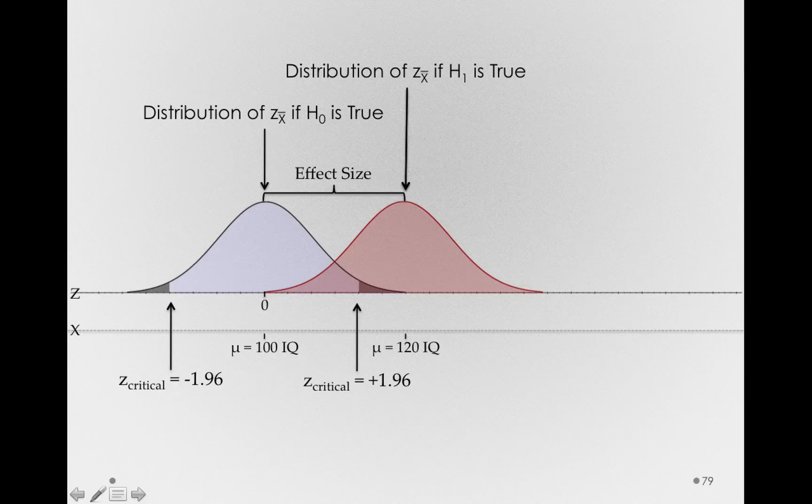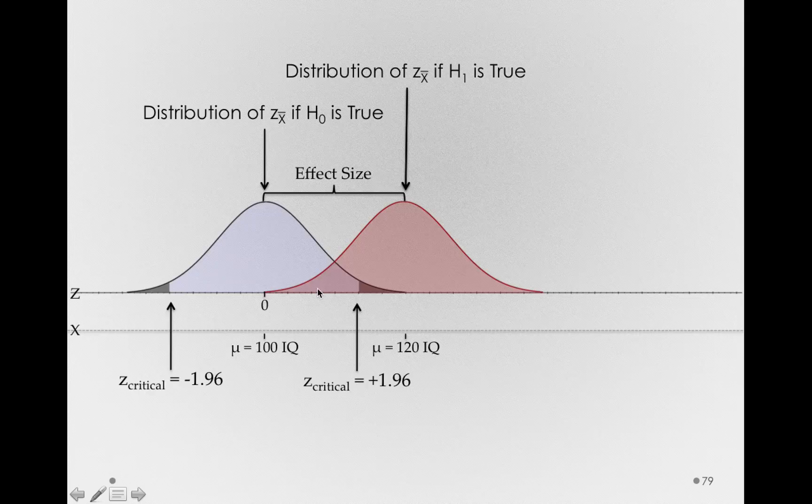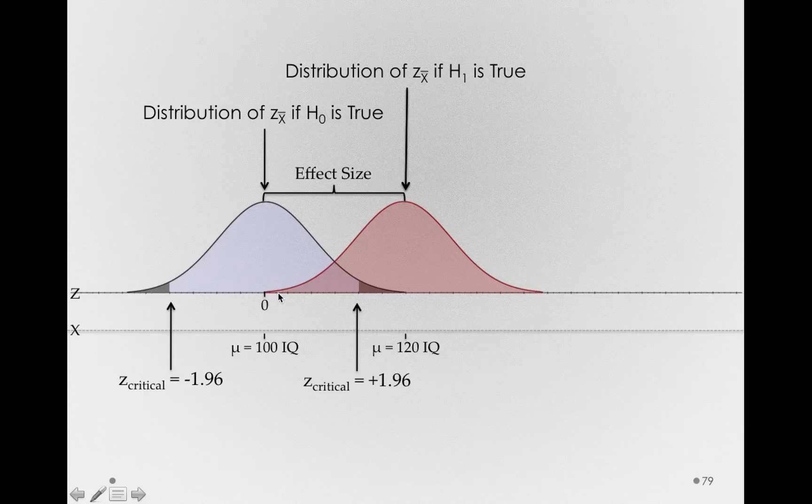Notice something before we go on. Even though we have a true effect of 20 points, that is, we've shifted the center of our sampling distribution of Z sub X bar up to here, we still will get sample means sometimes from this distribution down here around 110, or even sometimes down here around 102.